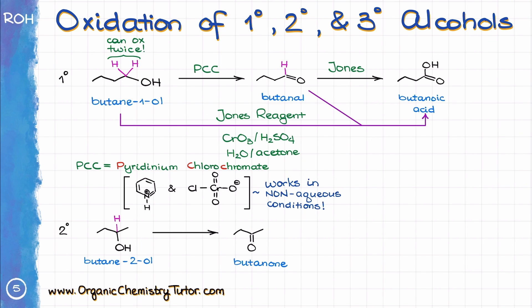PCC was first described by Elias Corey — a name you might recognize from his Nobel Prize in chemistry — and his student William Suggs in 1975. At the time, the discovery, which was quite accidental, was revolutionary. However, nowadays you'll be hard-pressed to find anyone actually using PCC in the lab due to chromium toxicity concerns.